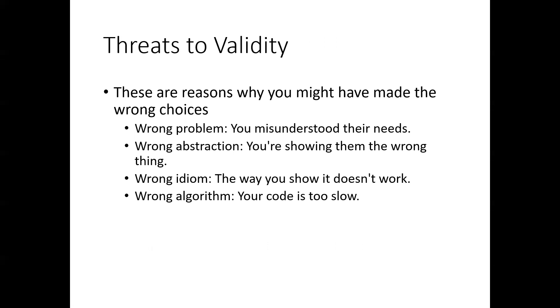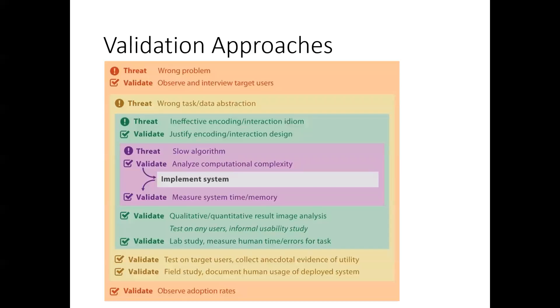So threats to validation or, are we building the right product? And there are reasons why we might have made the wrong choices going through this process. One, got the wrong problem. We misunderstood the needs of the user. Wrong abstraction. We might be showing the wrong thing or the incorrect idiom. The way we're showing it might not work. And then the wrong algorithm, the code may be too slow or it may require a lot of memory. We're getting a lot of experience with that in our tools that we're using for this visualization class. So you can certainly see that some of the tools that we've used may not work on all platforms.